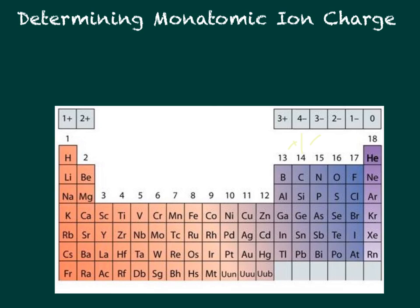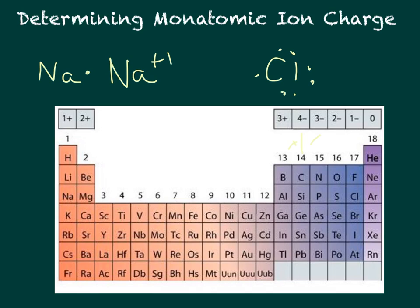Why does this happen? Sodium in Group 1A has one valence electron, so it can either add seven more electrons or lose one to drop to a lower energy level with a full outer shell. It's easier to lose one electron, so sodium becomes Na plus one. Chlorine in Group 7A has seven valence electrons. It can gain one electron to have a full outer shell, or lose all seven. It's easier to gain one, so chlorine gets a negative one charge. That's why these charges exist.